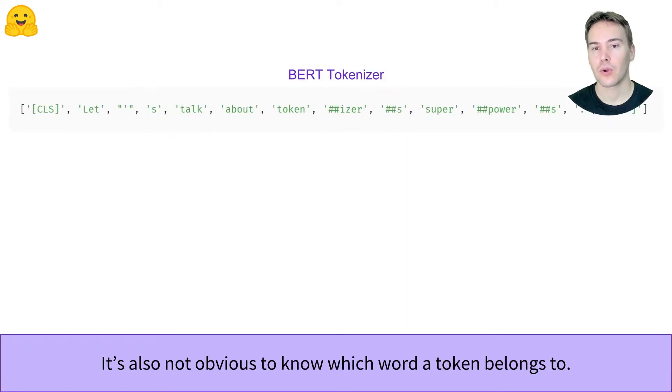It's also difficult to know when two tokens belong to the same word or not. It looks easy when you just look at the output of a BERT tokenizer, where we just need to look for the dashes, but other tokenizers have different ways to tokenize part of words.